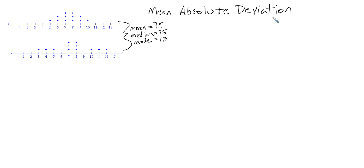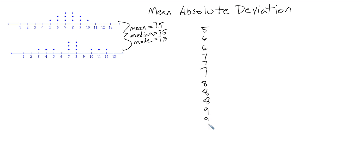For the mean absolute deviation, first we need to use the mean — the mean here is 7.5. What we're going to do is list the whole set of data: 5, 6, 6, 7, 7, 7, 8, 8, 8, 9, 9, 10. For each number in that data set, we're going to subtract the mean. The reason we're subtracting the mean is because when we subtract, we find the distance away from the mean that each number is.